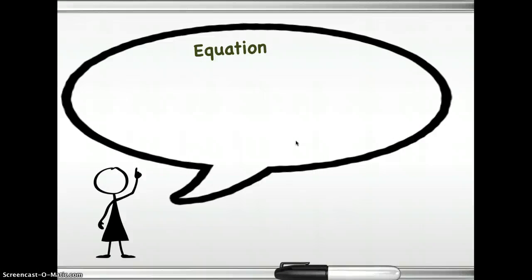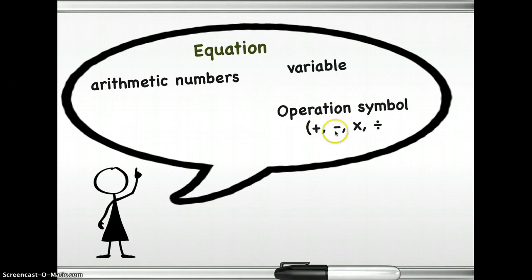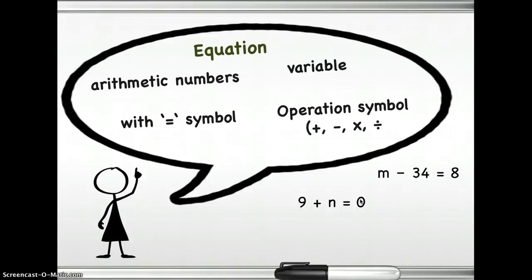Now let's move on to equation. An equation has arithmetic numbers or constants. It also has a variable. It should contain an operation symbol like the plus sign, minus sign, multiplication symbol, or division symbol. An equation must also have the equal symbol. For example, 9 plus n equals 0 — you have a constant, an operation symbol which is a plus sign, a variable, the equal symbol, and another constant which is 0. Another example: m minus 34 equals 8 — m is your variable, minus is your operation symbol, 34 is a constant, and then the equal symbol and 8.